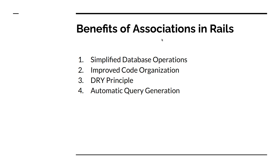Another benefit is the DRY principle. As we know, Rails supports the DRY philosophy — Don't Repeat Yourself. Active record associations promote this principle: instead of duplicating data or writing redundant code to establish relationships, you can define associations once and reuse them across your application whenever needed.